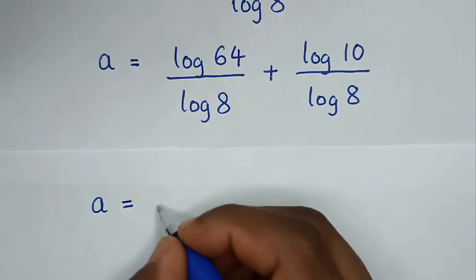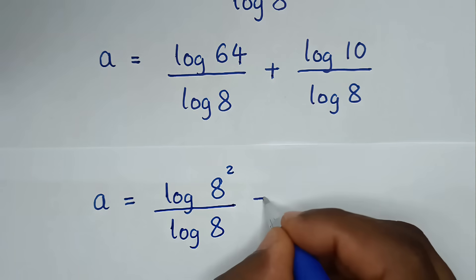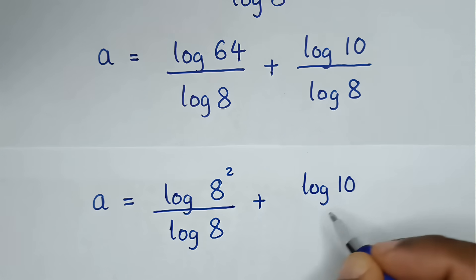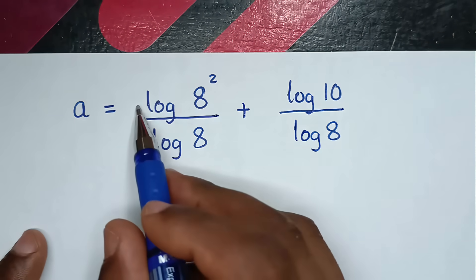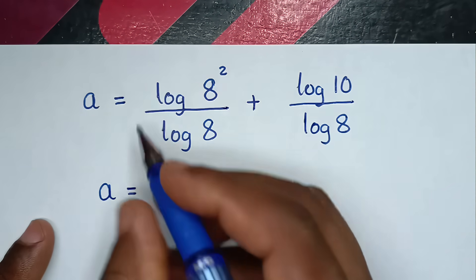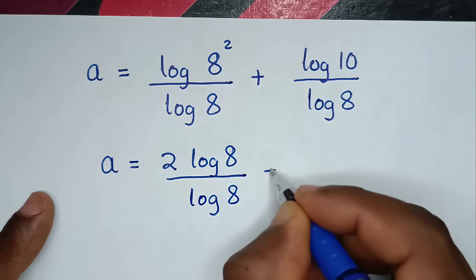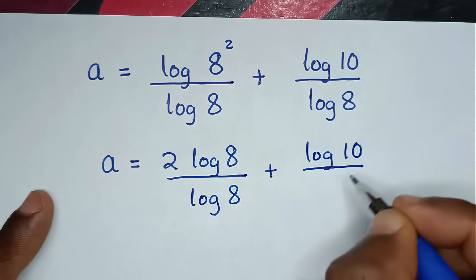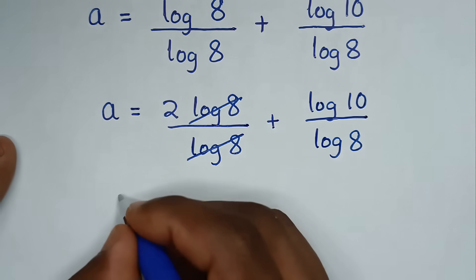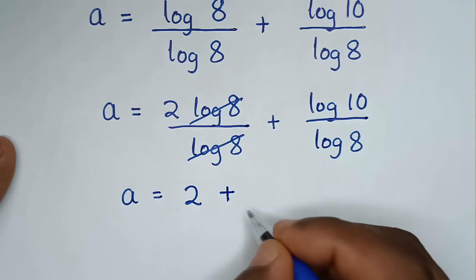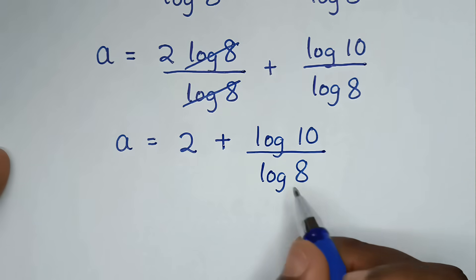So it will be log of 8 squared over log of 8, plus log of 10 over log of 8. This power of 2 will move to the base, so it will be 2 log of 8 over log of 8, plus log of 10 over log of 8. This log of 8 cancels this log of 8, so it will be A is equal to 2 plus log of 10 over log of 8. This is not the simplified form.